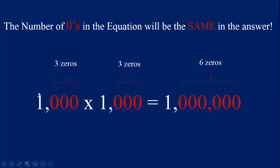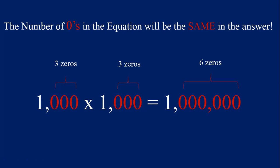Let's try 1,000 times 1,000 — we're getting into some larger numbers, but really all we need to know is what is 1 times 1. 1 times 1 equals 1, we write that first. Count your zeros: 1, 2, 3, 4, 5, 6 — and write six zeros in the answer. Move over three place values, write in those commas, and 1,000 times 1,000 equals 1 million — a 1 with six zeros after it.